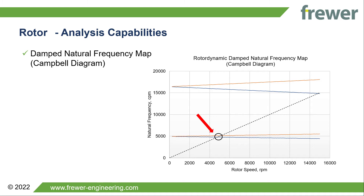Once bearings are chosen, Campbell diagrams allow the designer to observe any intersections with excitation frequencies and predict the gyroscopic effects of forward and backward whirl.